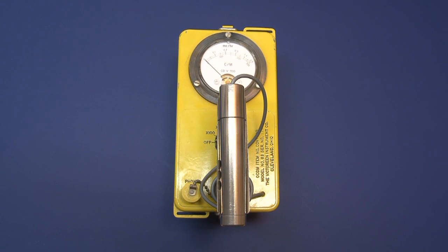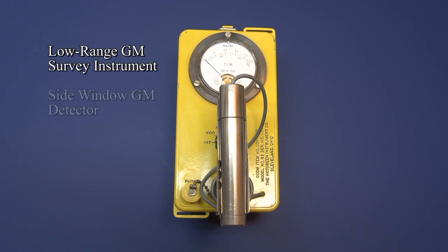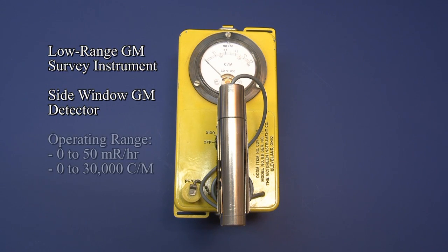This is a sensitive low-range survey instrument that employs a side window GM or Geiger-Mueller detector. The instrument gives an overall operating range of from 0 to 50 MR per hour, or 0 to 30,000 counts per minute.